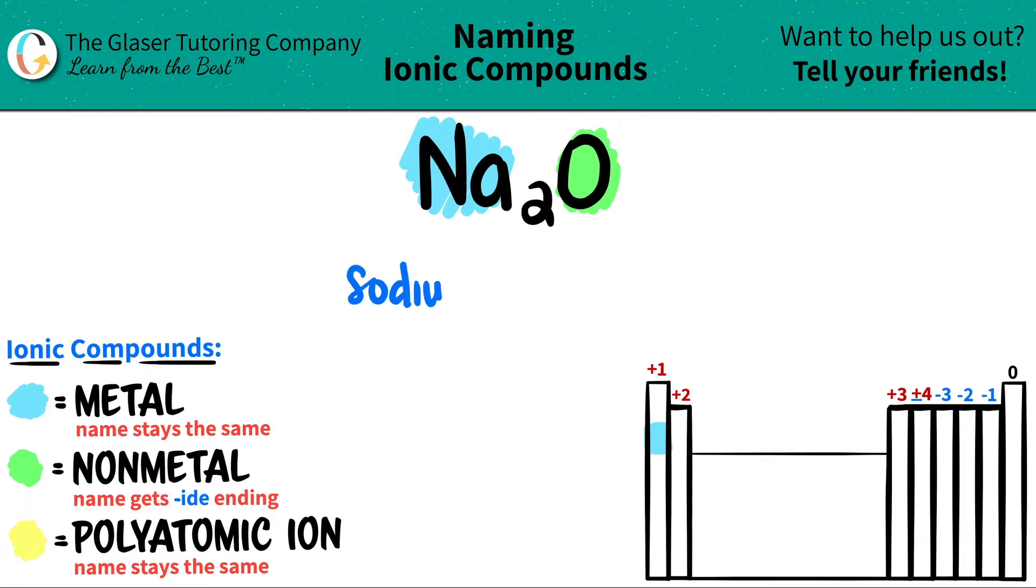And then the nonmetal name, which is the oxygen, that name always gets the I-D-E ending. So it won't be oxygen, it would be oxide. So this Y-G-E-N gets canceled out and it just turns into oxide.